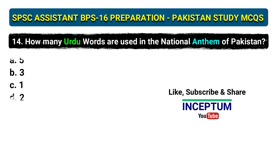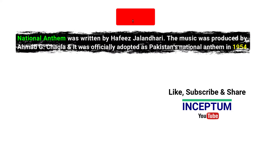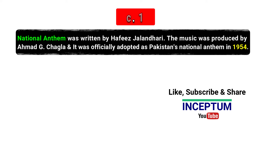Question 14: How many Urdu words are used in the national anthem of Pakistan? Options: 5, 3, 1, 2. The correct answer is option C, 1. The national anthem was written by Hafiz Jalandhari. The music was composed by Ahmad G. Chagla and was officially adopted as Pakistan's national anthem in 1954.